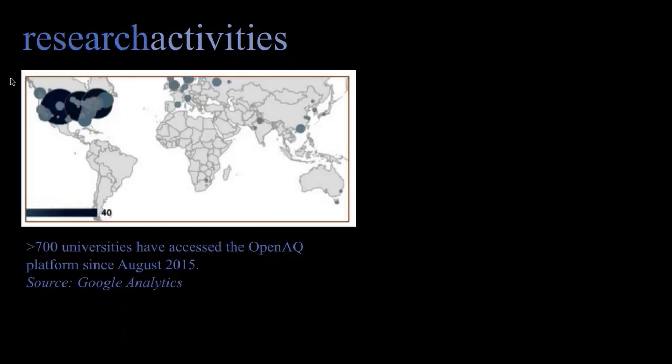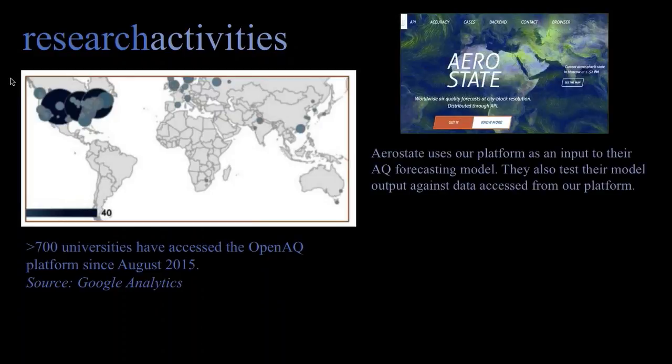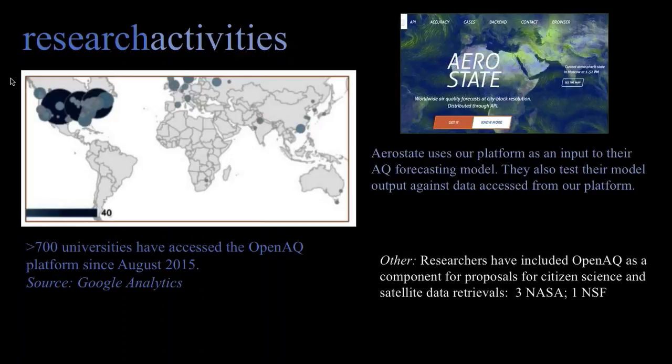Here are a few highlights from our research activities. We've had a lot of different universities and research organizations accessing our system. We've also seen various organizations use our platform as input into their air quality forecasting models and test their model output against data from our system. People from different organizations have told us after the fact that they've submitted proposals to NASA and NSF that used our platform in some sense.